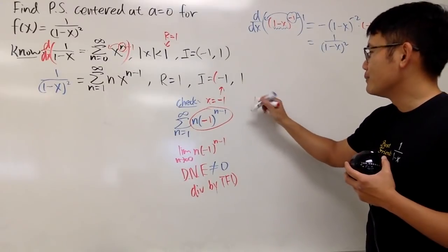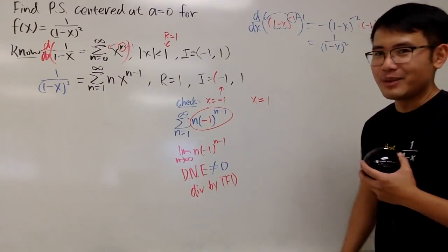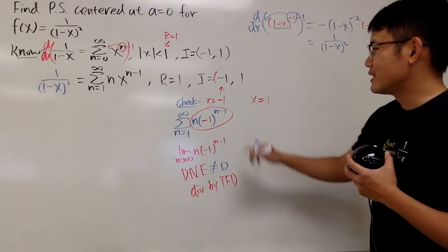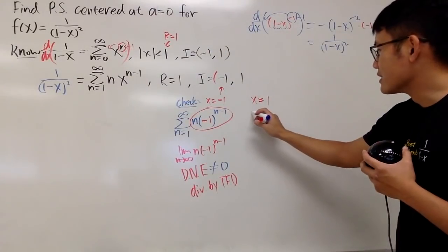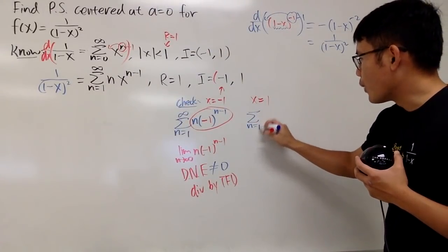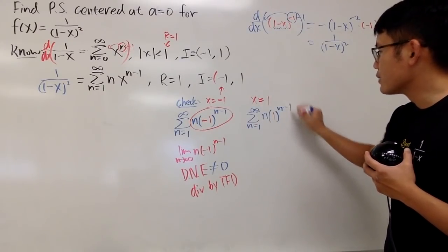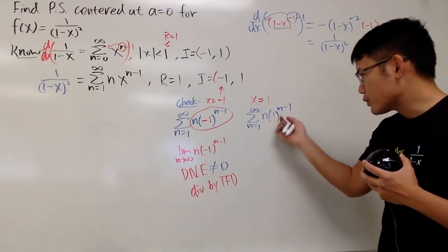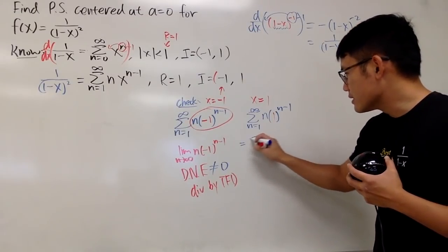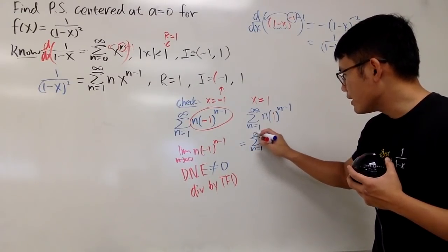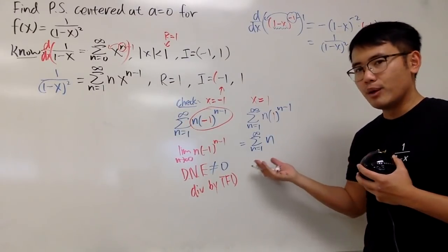And now we'll have to check x equals 1. Put 1 into the x right here. So we get the sum as n goes from 1 to infinity, n times 1 to the (n-1) power. This is just always 1. In other words, this is the sum as n goes from 1 to infinity of n, namely all the natural numbers, namely 1, 2, 3, 4, 5, 6, and so on.